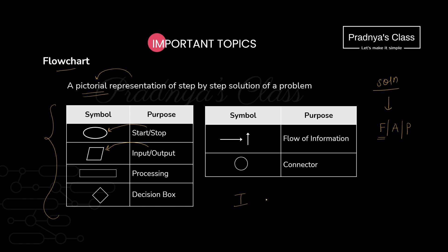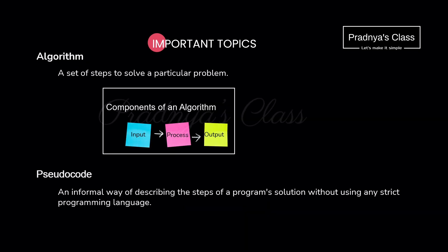We follow the approach of input, process, and output. For processing we use a rectangle. If based on a decision we need to execute certain statements, we use the decision box — it is a diamond or rhombus. All these shapes are connected using arrow symbols to signify the flow of control. If your flowchart is lengthy and won't fit on one page, you can use connectors to continue to the next page.